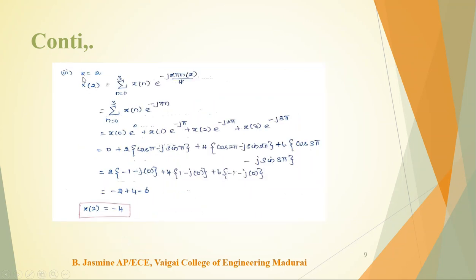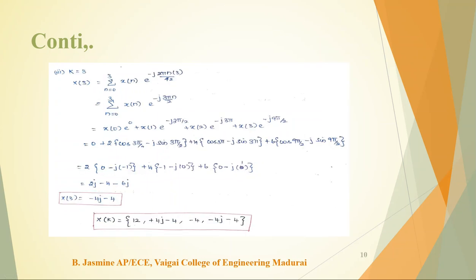Likewise, substitute k = 2 and k = 3 in the formula to get the remaining DFT values. The final result for X(k) is written as: X(k) = {12, −4+4j, −4, −4−4j} for k = 0, 1, 2, 3 respectively.